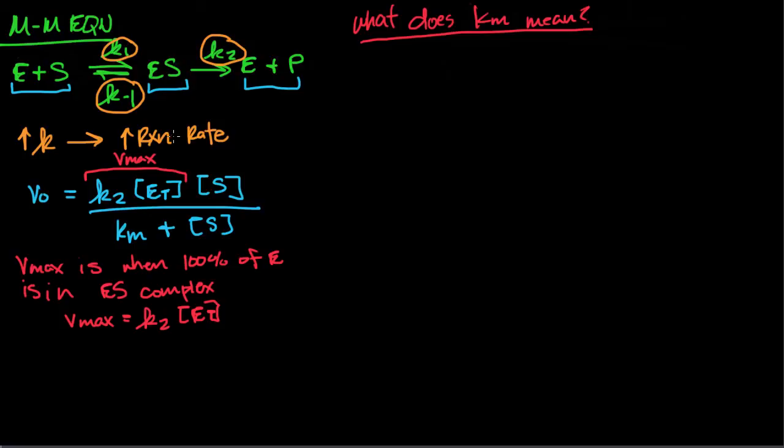So Vmax: the higher your Vmax is, the higher your velocity tends to be. And then Km: Km is a constant that measures the affinity between the enzyme and the substrate. The greater the affinity between the enzyme and the substrate, the more likely the enzyme is to catalyze the substrate and achieve your desired catalytic reaction.